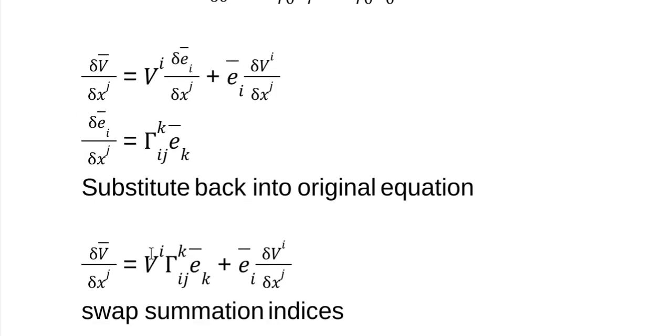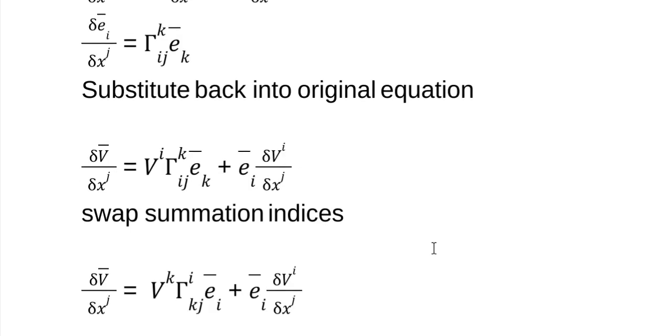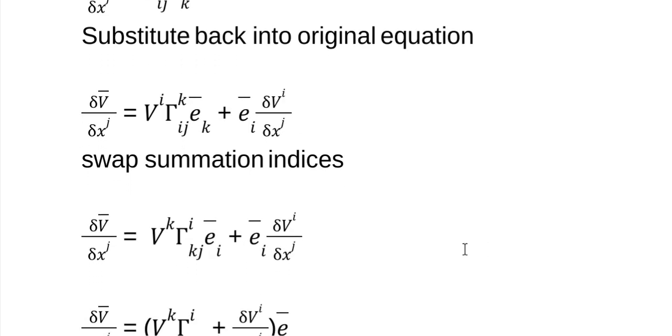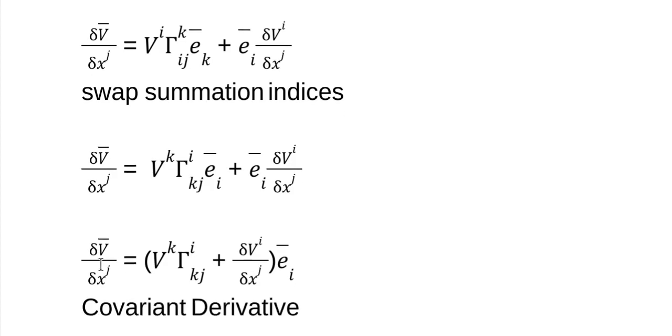Now look at this. I have an i in an upper and an i in a lower, a k in an upper and a k in a lower. So both of these are summation indices or dummy indices. They call them in tensor calculus. So I can just swap these. There's no rule that says I can't because they're just summation indexes. They don't mean anything. So I swap them. And I get an ei in both terms. I factor that out. And I have this.